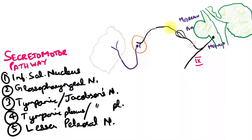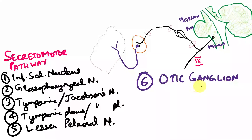The lesser petrosal nerve emerges out in the cranial fossa through the foramen of the lesser petrosal nerve, and then emerges again through the foramen ovale and synapses at the otic ganglion. This much — from the inferior salivatory nucleus to the lesser petrosal nerve — is a single pre-ganglionic neuron, shown in black. The lesser petrosal nerve synapses at the otic ganglion, which is the parasympathetic ganglion related to the parotid gland and is the relay station where the pre-ganglionic neuron synapses with the post-ganglionic neuron. I am using purple to show the next neurons.